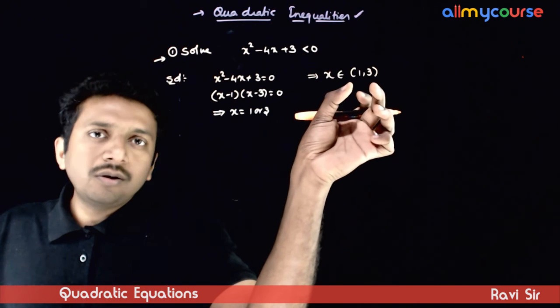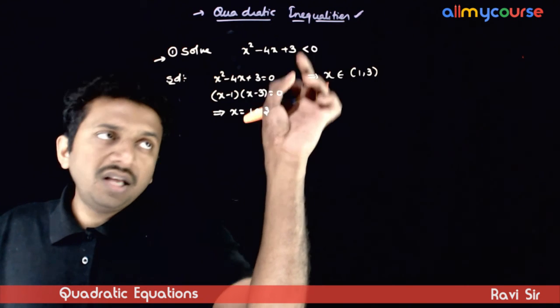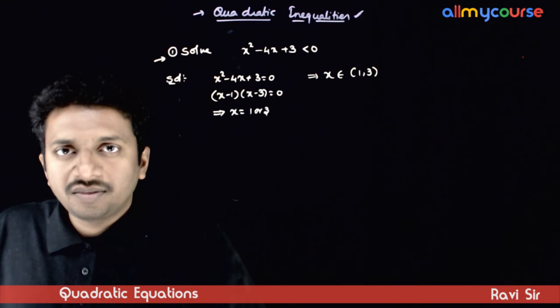If you have an equal to here, you get a closed interval. If you don't have an equal to here, you get an open interval, that's it.